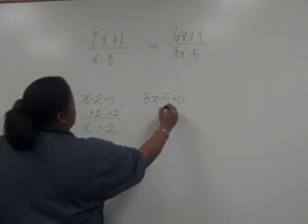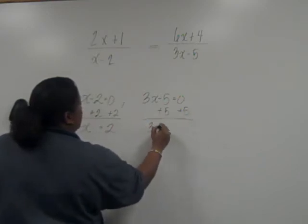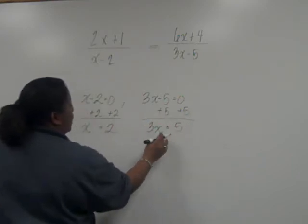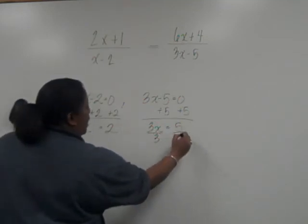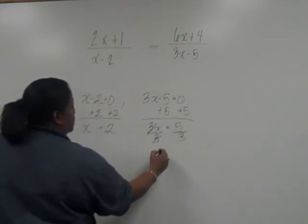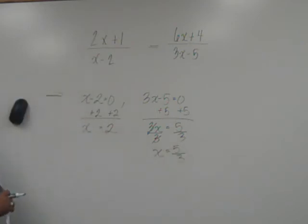Here, we'll add five to both sides, and we get three x equals five, but then we have to divide both sides by three, and we get x equals five-thirds.